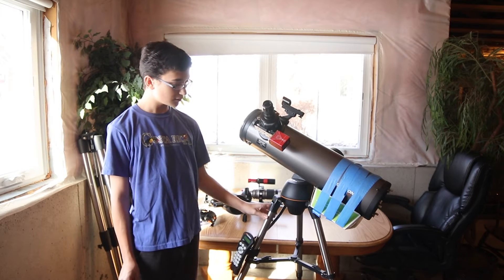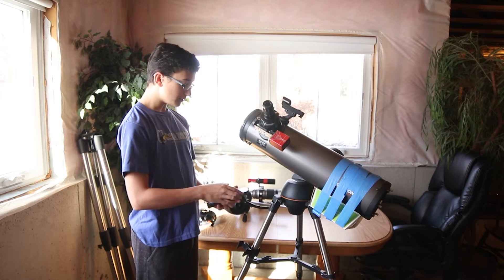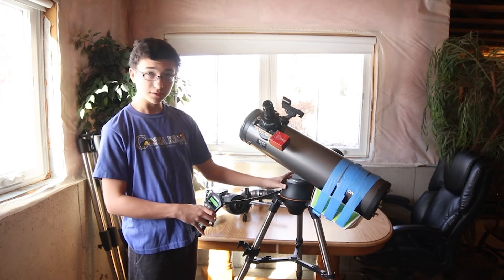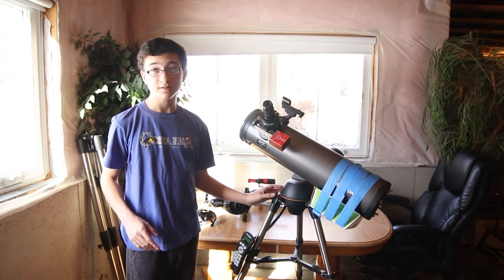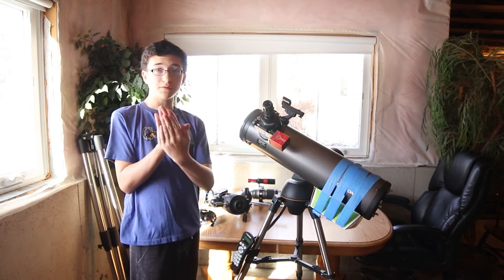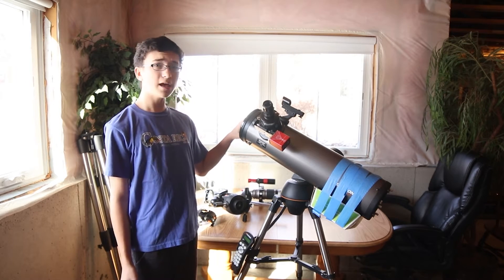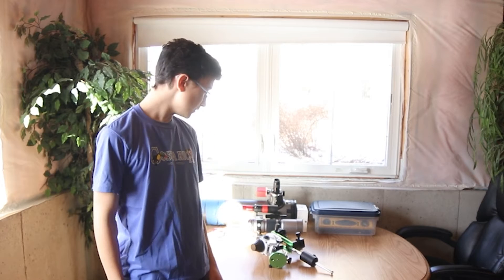This telescope meant for visual is on this little mount. This mount also can go to an object using this hand controller. It's an alt-azimuth mount which means it just goes up, down, left and right movement. I did that for basically that entire year by the end of 2019 when I was 13 years old.